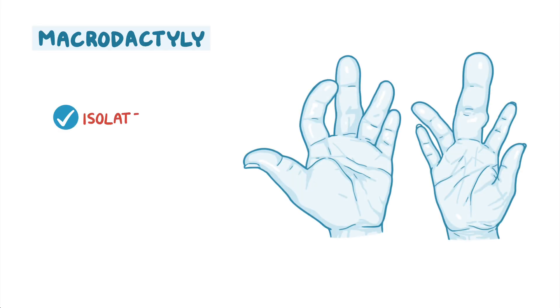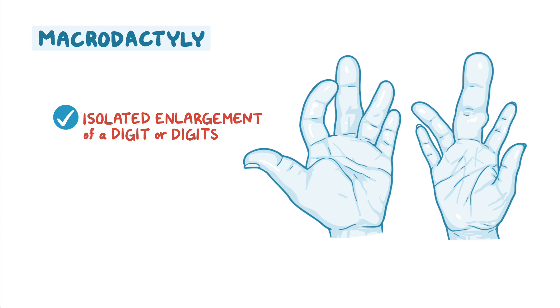Macrodactyly is isolated enlargement of a digit or digits due to overgrowth of bone and soft tissue, which can be painful and reduce mobility or dexterity.